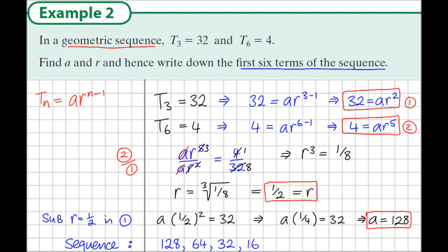16, 8, and 4. Now let's check, does this agree with what we were given? We know term 1 is 128. The question said term 6 is 4, we have that, and term 3 is 32. So it does agree with the information.